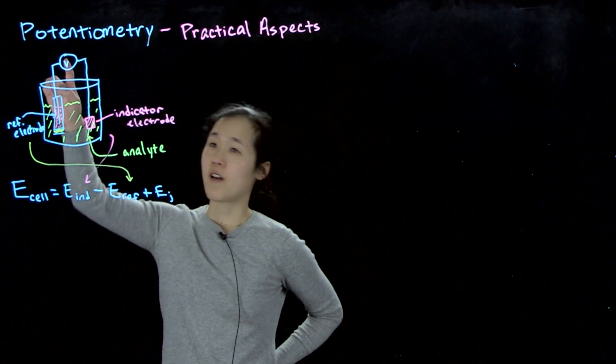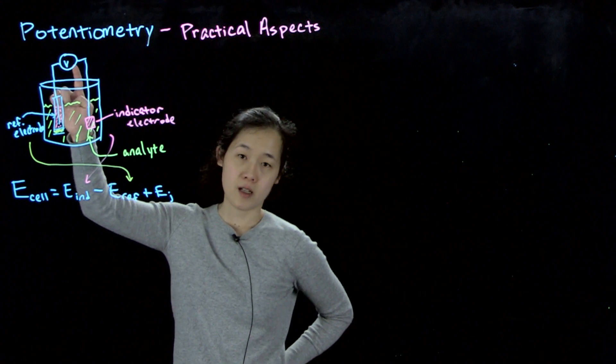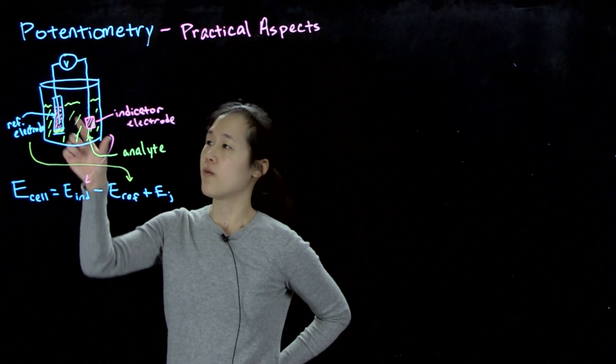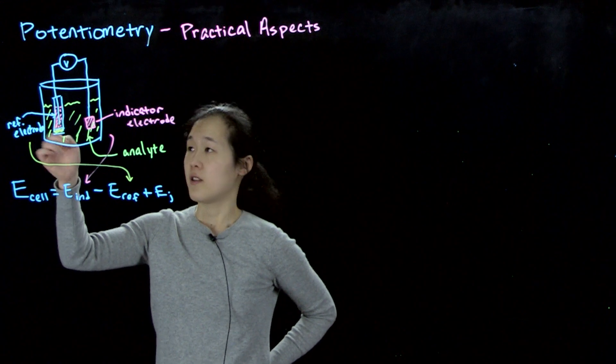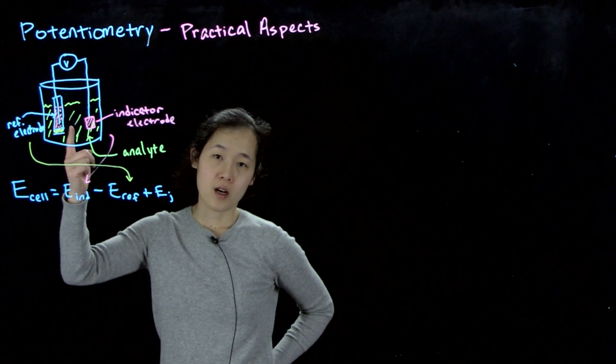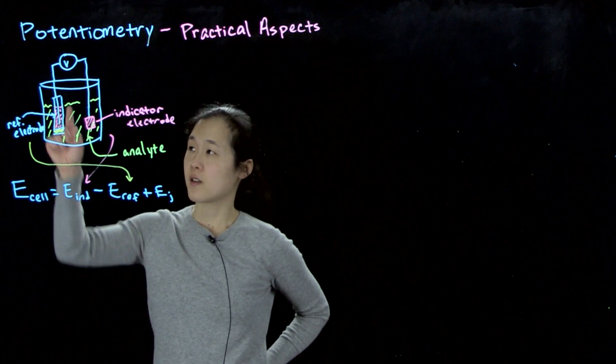So the main setup is we have this voltmeter, so that reads off the cell potential between two half-reactions. One half-reaction is at the reference electrode. This could be a number of things. I'll talk about some common reference electrodes that are used. So this is one half-reaction.